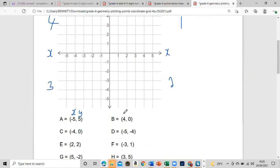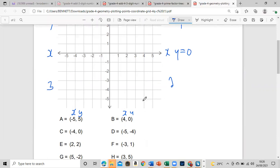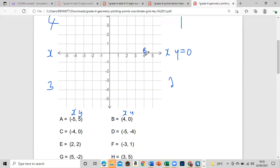B says x is 4. Something very important - you will see the x-axis is the line y equals zero. So every point on this line, y is zero. So this one says x is four and y is zero, so we just find it right here, which would be B, because y is zero on the x-axis.